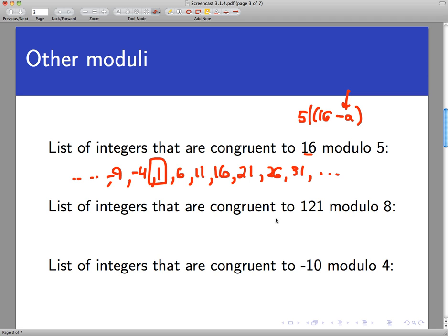Let's ask the same question using 121 mod 8. Now 121, to use the general idea from above, 121 is certainly one of those integers that's congruent to 121. If two integers are equal, they are definitely congruent to each other, mod 8 in this case.